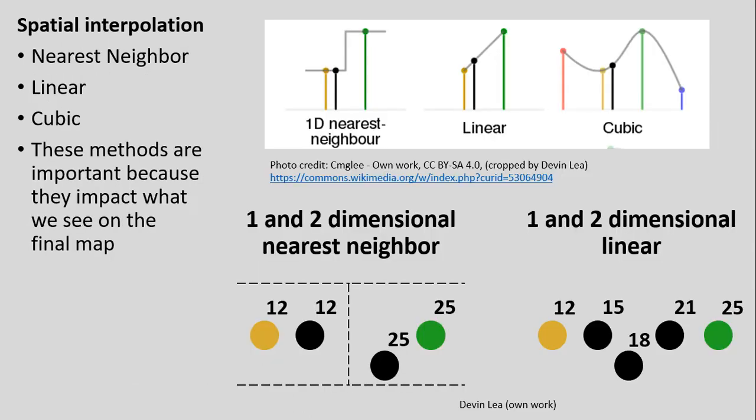Making that continuous surface from point measurements relies on what we call spatial interpolation methods. This is often covered in advanced courses, but I want you to be aware of three main types here, because many of the ISO line and continuous surface maps we'll be looking at are derived from point or location-based measurements, and the interpolation method used impacts what we see on the final map.